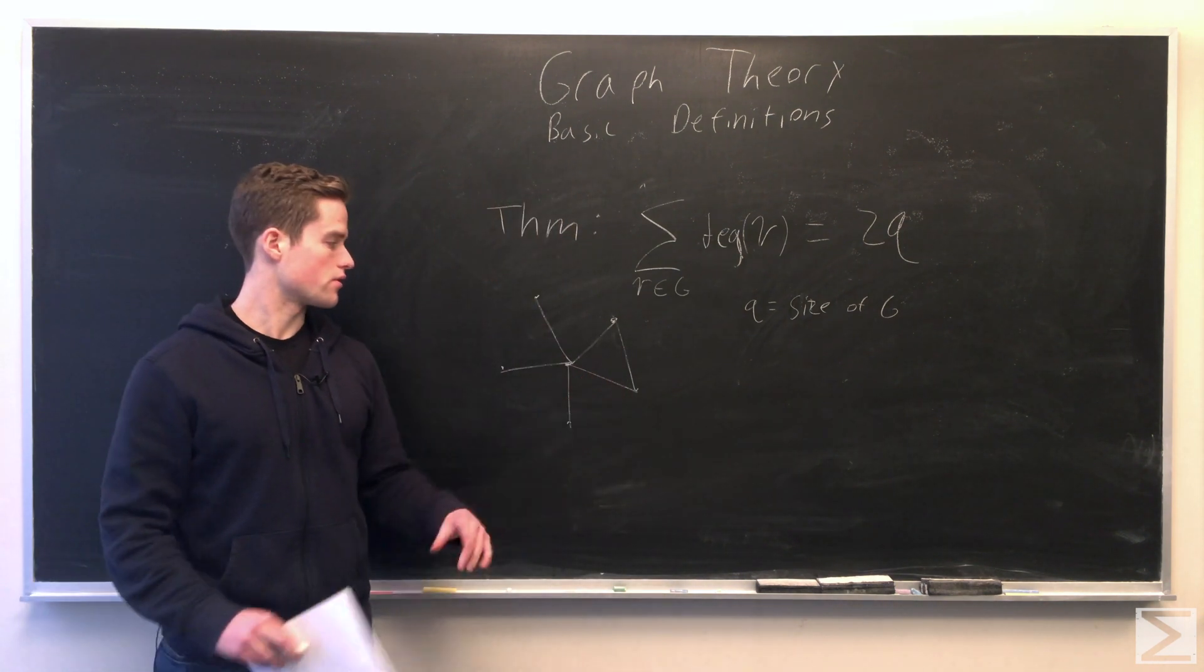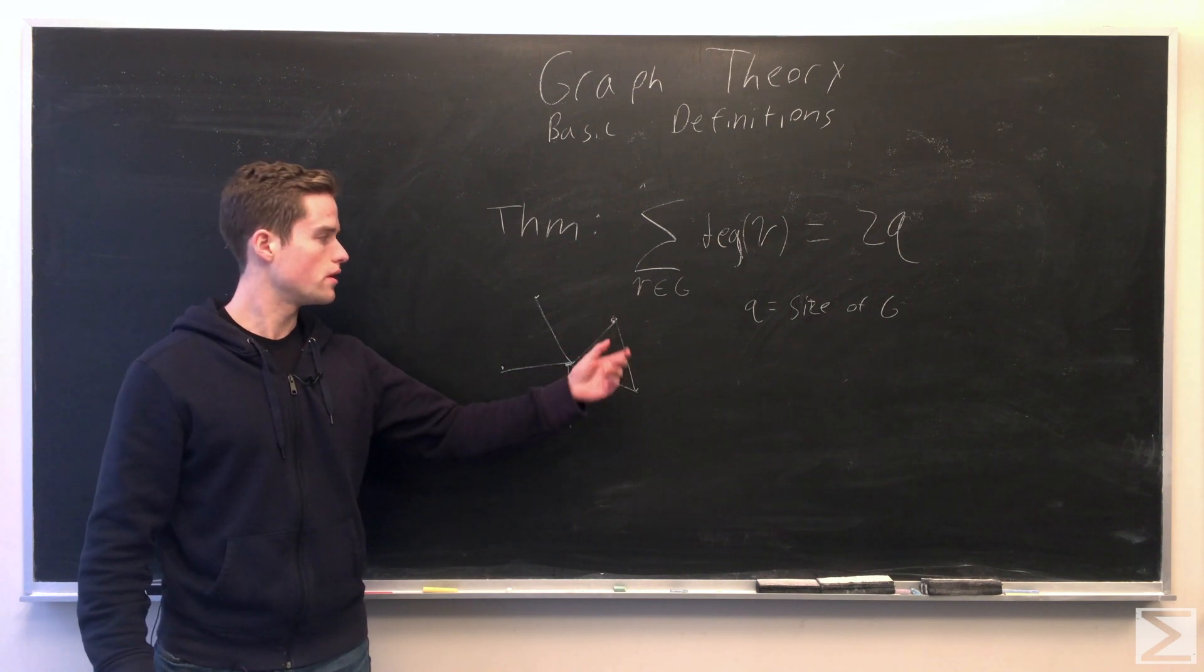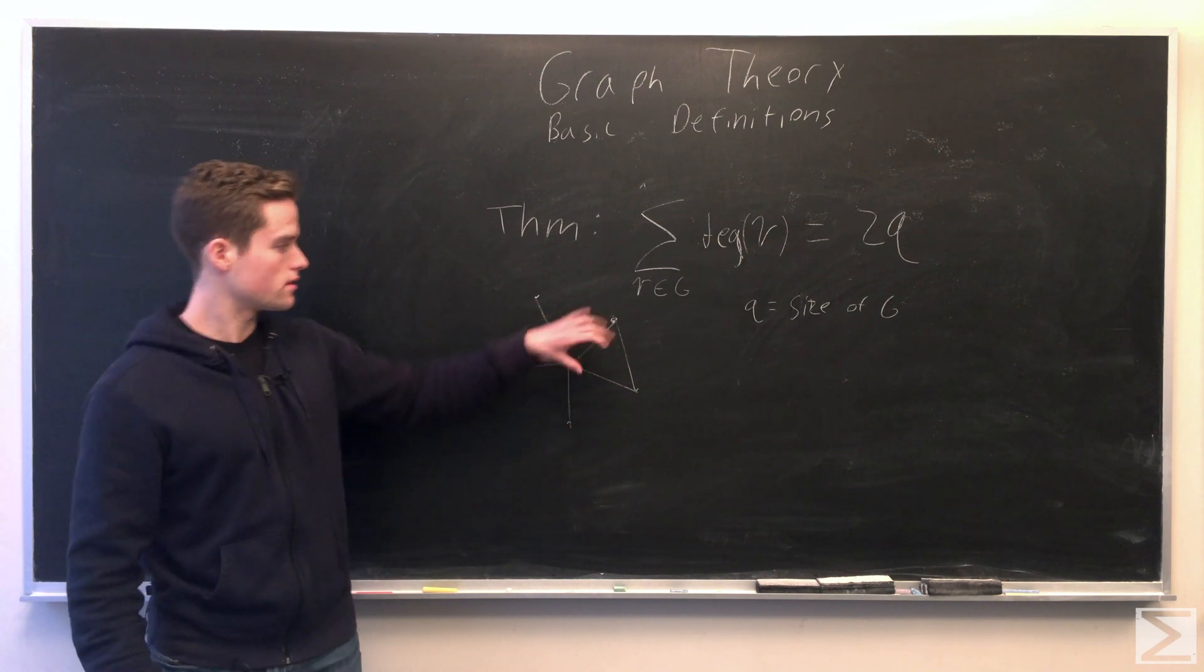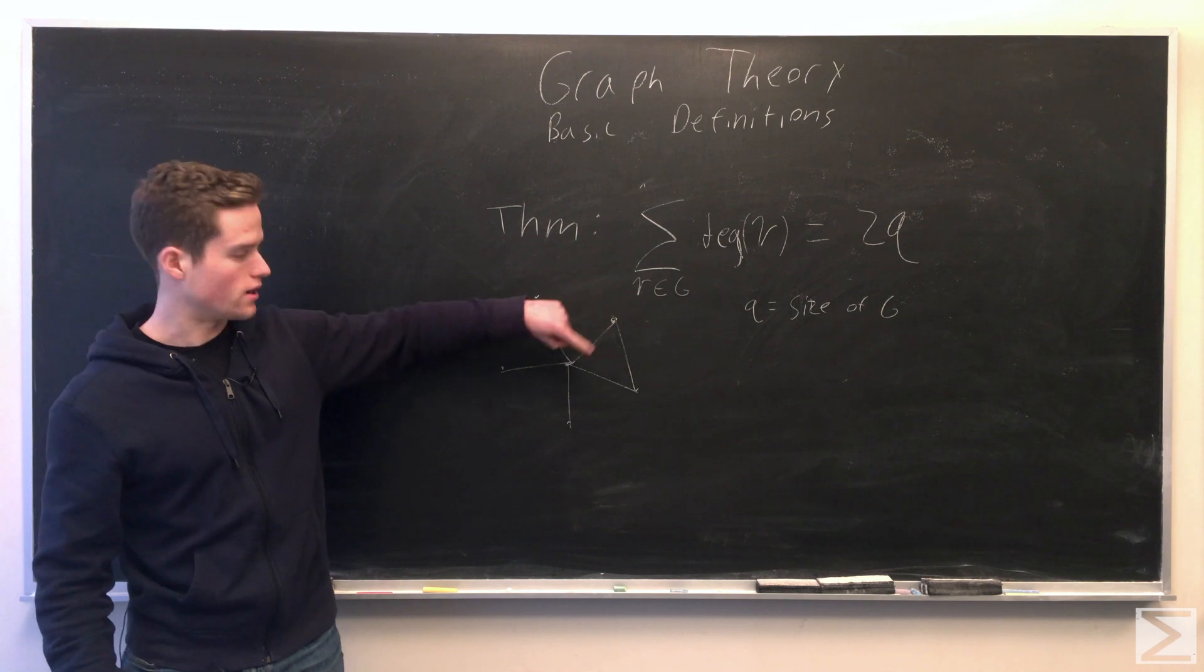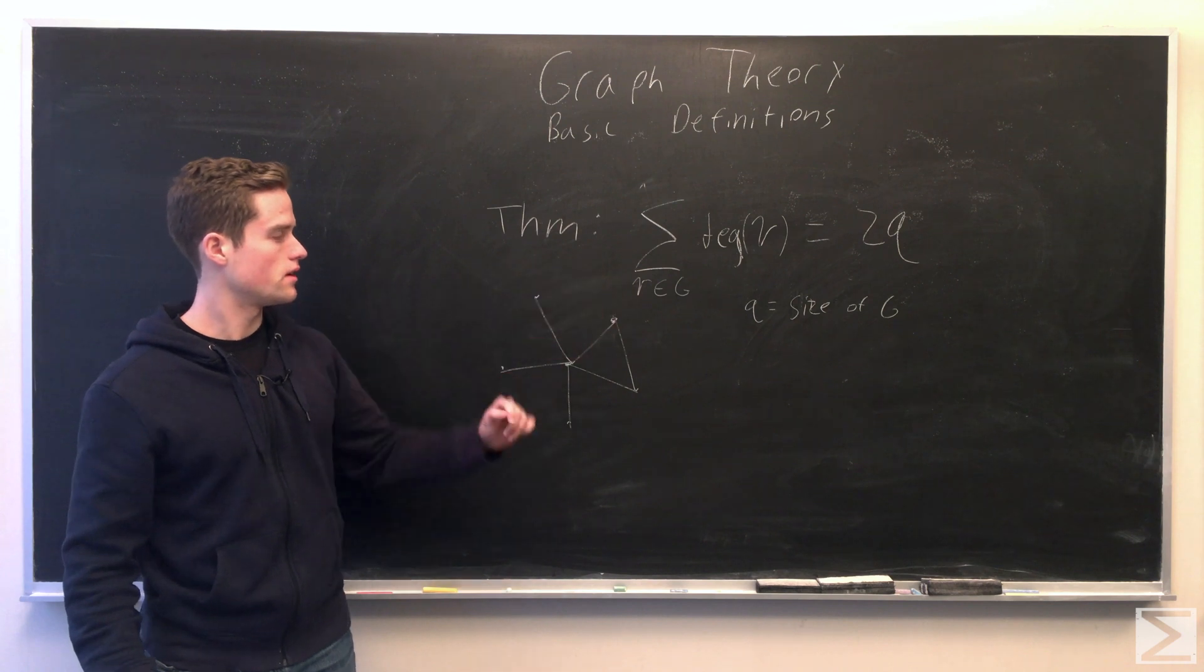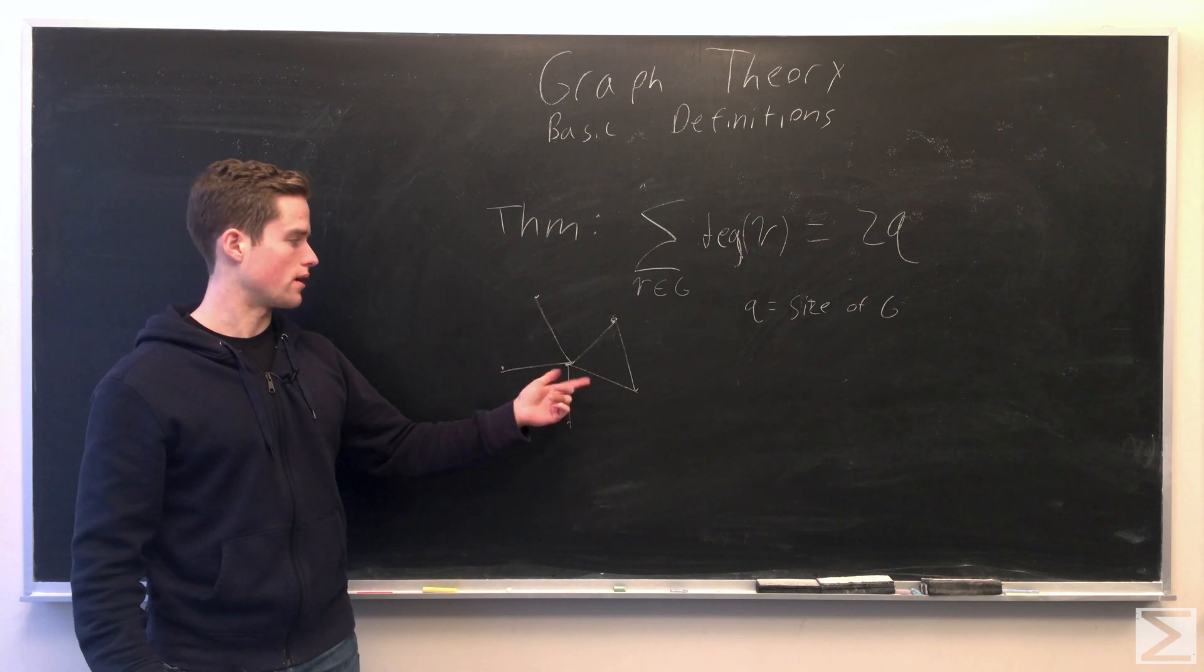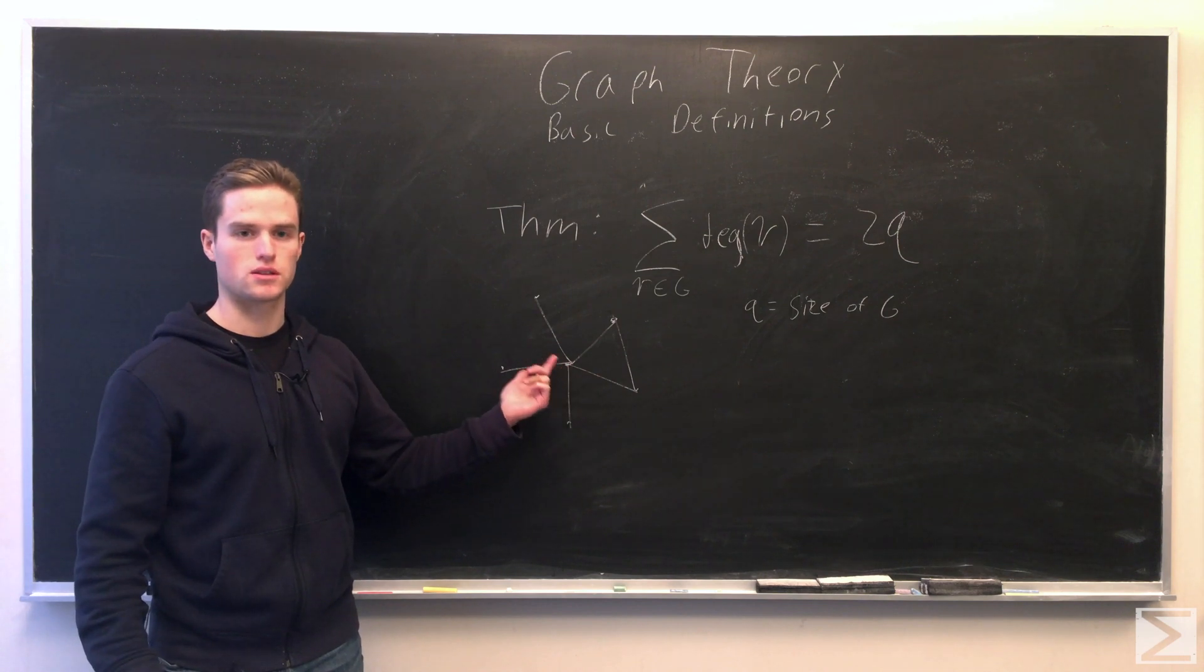So like here, the degree of the center vertex is 5, the degree of this one, 2. As we go through this, take this edge. This edge will be counted twice. Once from the degree function here, and once from the degree function here. And so we do this over all the vertices, we get 12. We have 6 edges here, 2 times 6, 12.